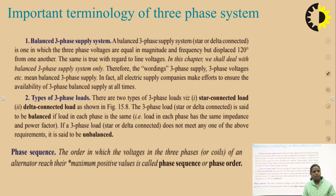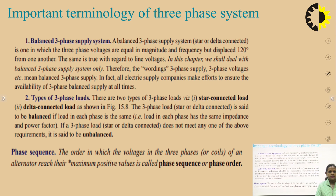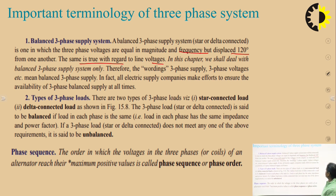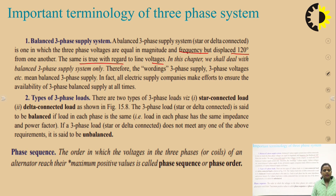There are some important terminologies of the three-phase system. The first is balanced three-phase supply system, which could be star connected or delta connected. It is one in which the three-phase voltages are equal in magnitude and frequency but displaced 120 degrees from one another. In this discussion we shall deal with balanced three-phase supply only, so whenever we say three-phase supply or three-phase voltage, it means balanced three-phase supply.